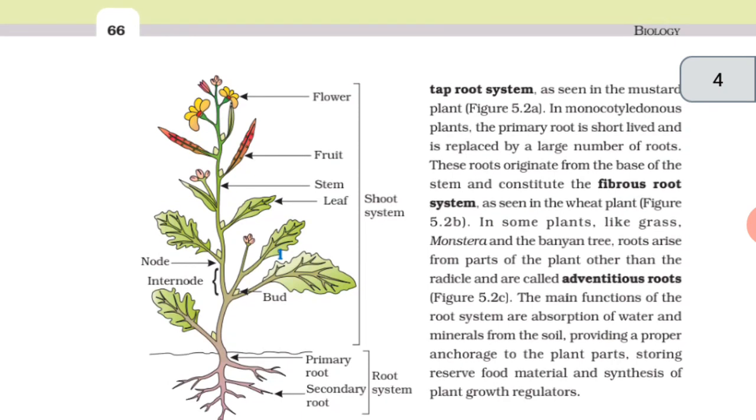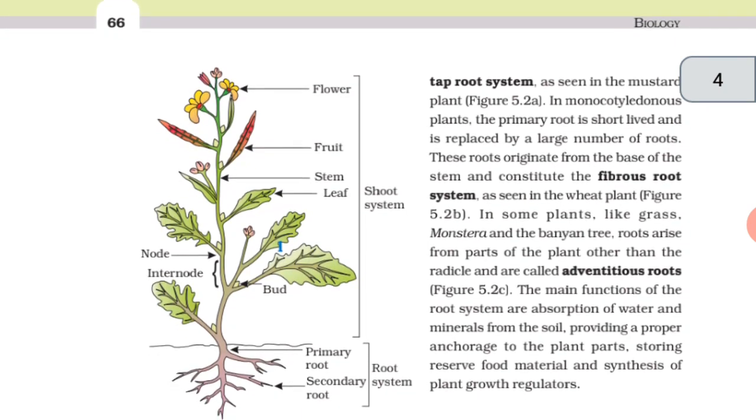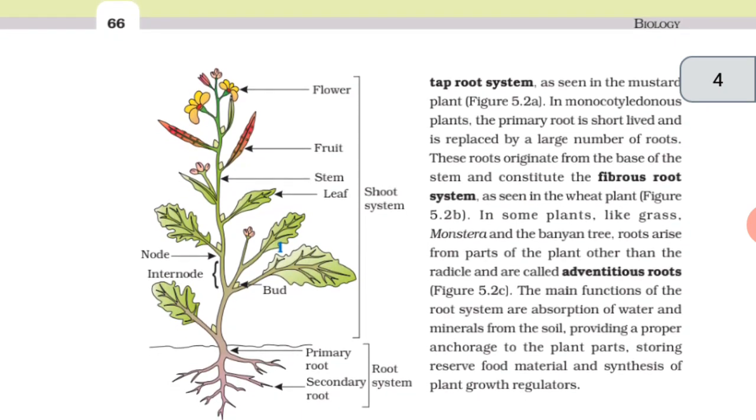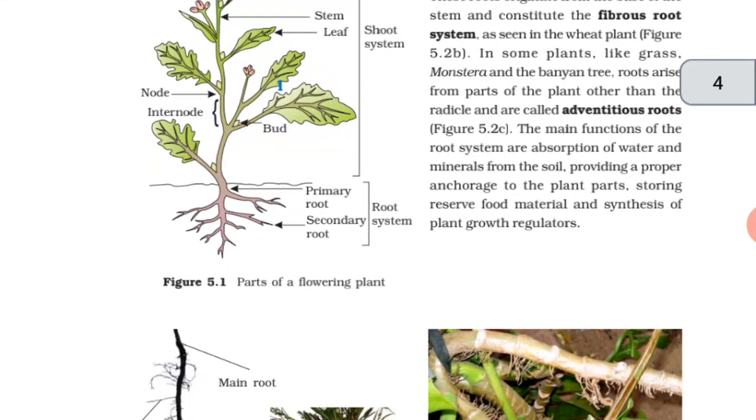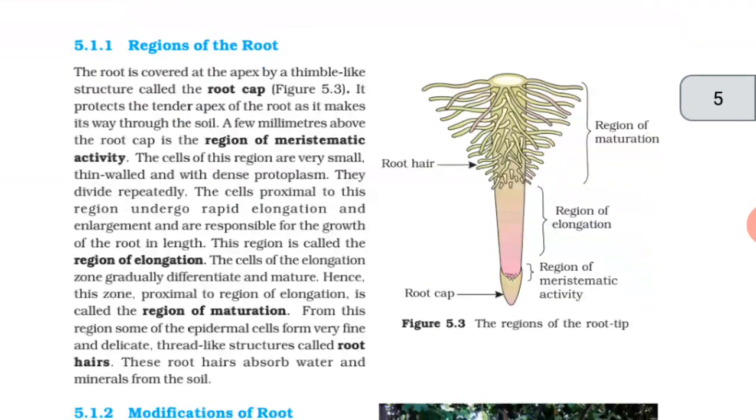The main functions of the root system are absorption of water and minerals from the soil, providing a proper anchorage to the plant parts, storing reserve food material and synthesis of plant growth regulators.